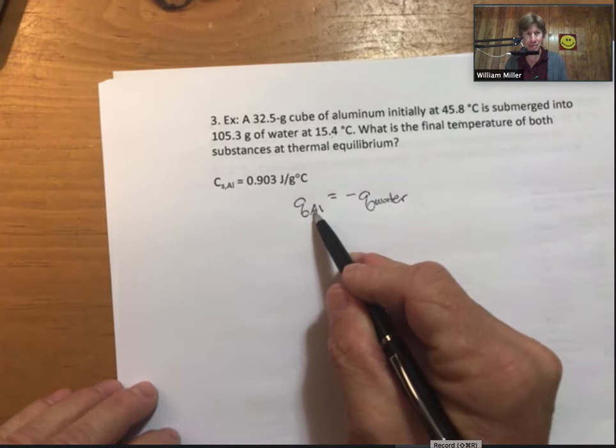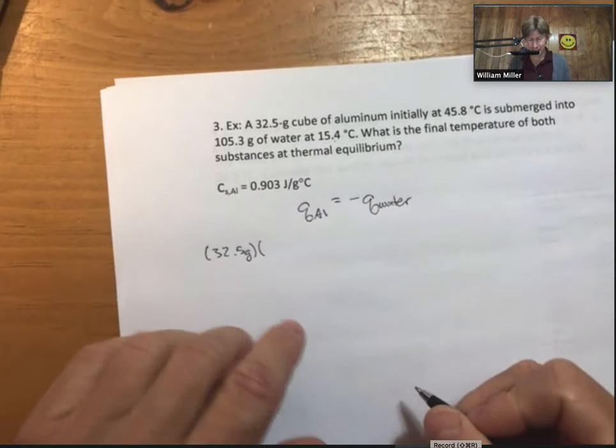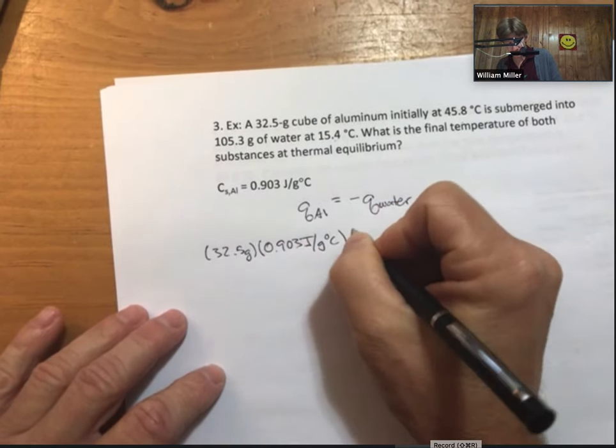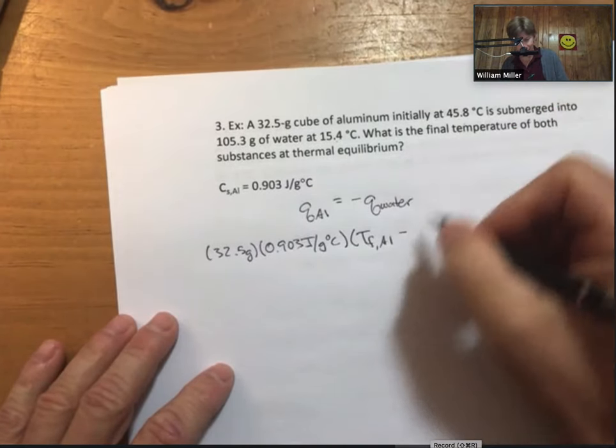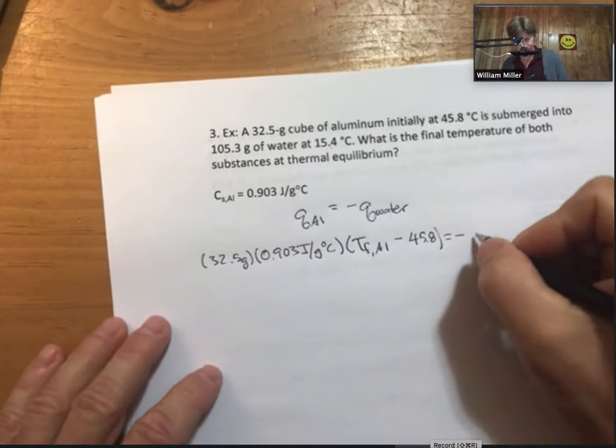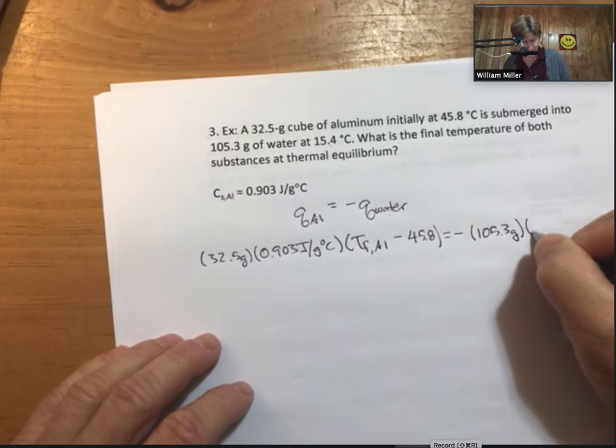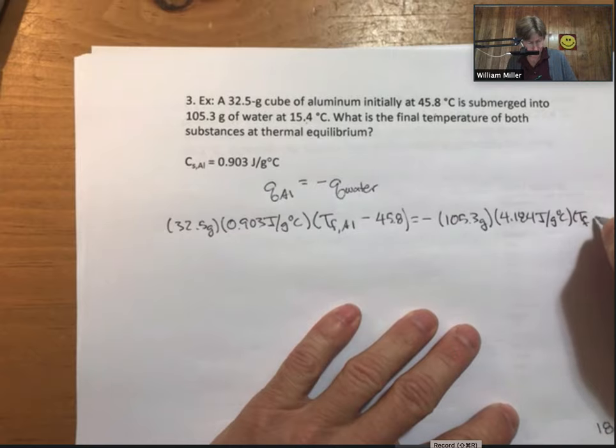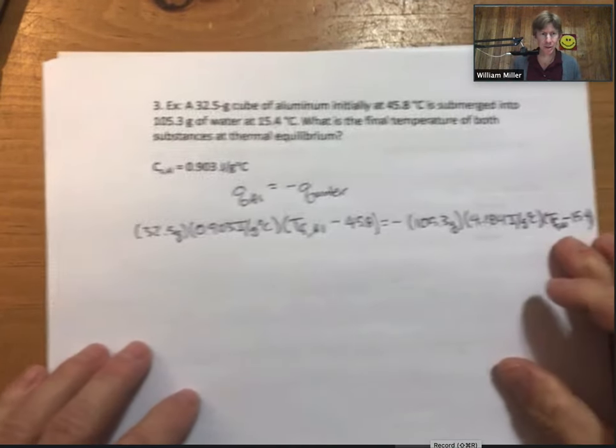I'm going to plug everything in directly from our equations. It's going to be mass times specific heat times temperature change of our aluminum. My mass of aluminum, my specific heat is given for my aluminum. My T final for my aluminum is not known, but my T initial is 45.8. Do not forget the minus sign. Mass of water, specific heat of water, temperature change of water. T final water minus 15.4. My T finals are the same.